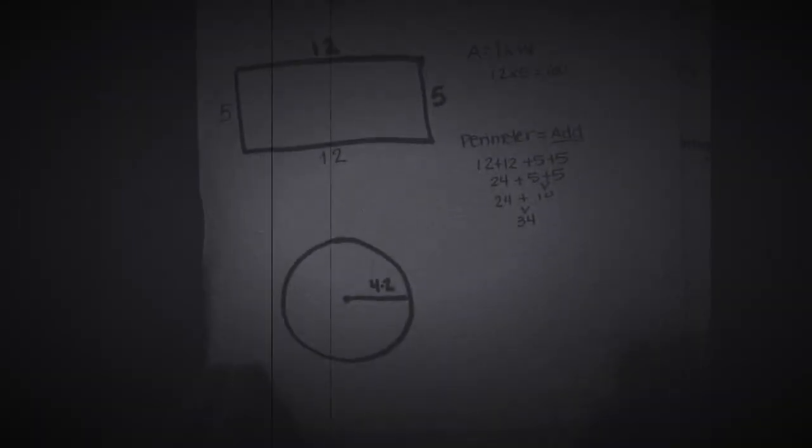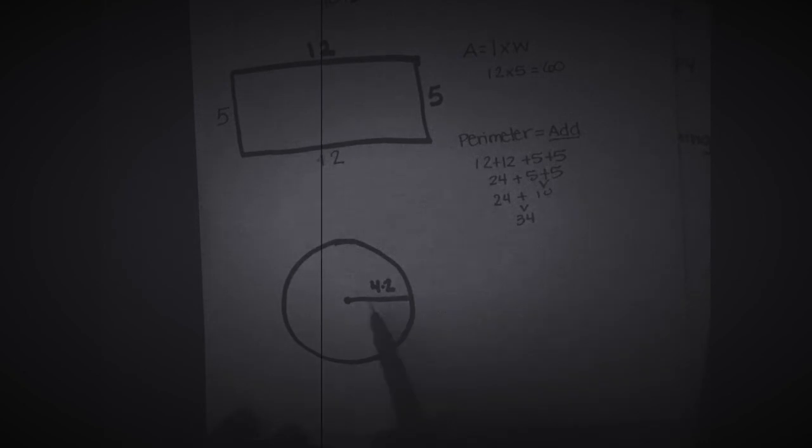Last thing I want to go over before you go do the work on your own is reminding radius and diameter. Here we are looking at radius. If my question is find the diameter, I'm going to take radius, which is equal to 4.2 right now, and I'm going to just times that by 2, which is 8.4.